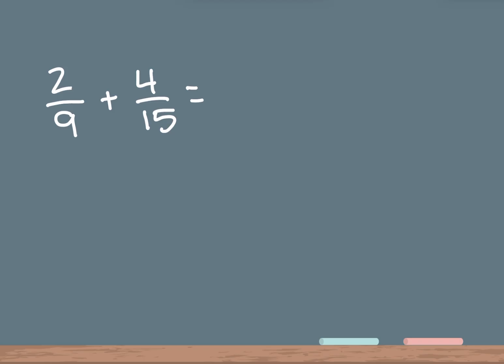I'm going to write it out. Taking the first bottom number, 9: 9 times 1 is 9, 9 times 2 is 18, 9 times 3 is 27, 9 times 4 is 36, 9 times 5 is 45.